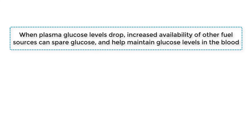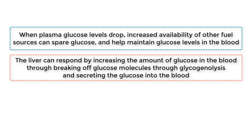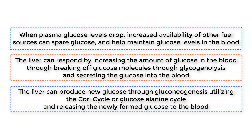Thus, when plasma glucose levels drop, increased availability of other fuel sources can spare glucose and help maintain glucose levels in the blood. The liver can respond by increasing the amount of glucose in the blood through glycogenolysis and secreting the glucose into the blood. Lastly, the liver can produce new glucose through gluconeogenesis utilizing the Cori cycle or the glucose alanine cycle and releasing the newly formed glucose to the blood.